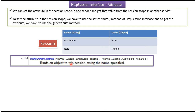If I want to set an attribute in the session scope, I use the setAttribute method. This method has two parameters: first is name and the next is value — it is like a key-value pair. For example, to set username as 'rom', I call session.setAttribute with name 'username' and value 'rom'. Similarly, to set a role, I call session.setAttribute with name 'role' and value 'admin'. This stores the attribute as a key-value pair in the session scope.